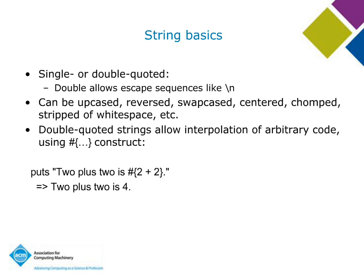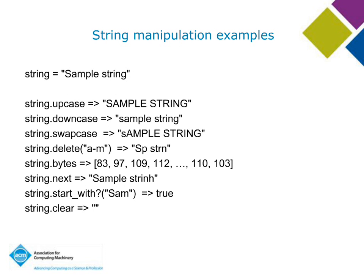Just a few things you can put strings through: upcase a string, downcase a string, swapcase a string. There's a `delete` method — if I say `delete('a-m')`, it deletes everything between a and m. You can also call `chars`, `codepoints`, and `lines` to process a string as an array of characters or bytes. `String.next` actually increments a string — if a string ends with 'g', next gives you 'h'. `start_with?` tests the beginning. `clear` empties the string.